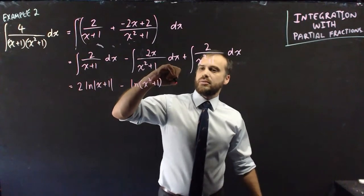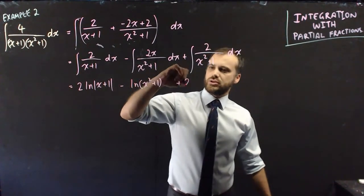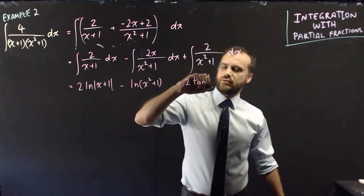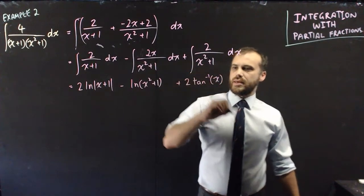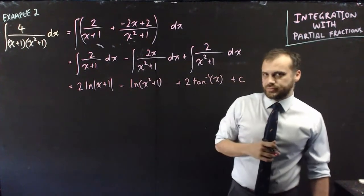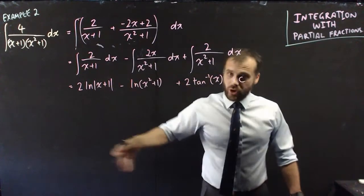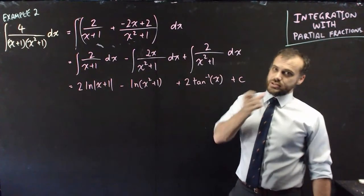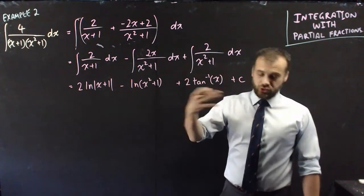So that's going to be plus 2, tan to the negative 1 x. And then finally, don't forget your plus c on the end. Now we've already done a lot of work. Remember, we did the whole partial fraction thing, and now we've done this integration thing. That is the integral, and you could use it.